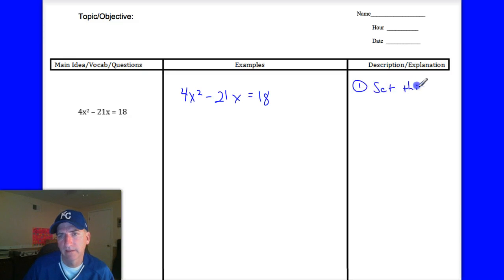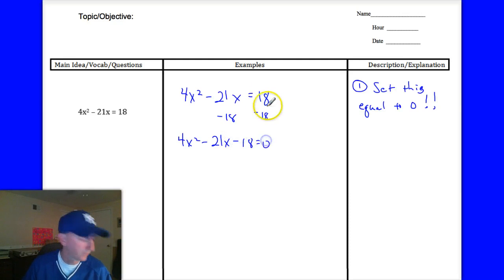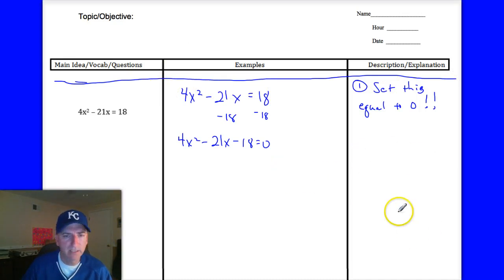So first thing we have to do, set this equal to 0. That's huge. You have to do that first. It goes back to that standard form, AX squared plus BX plus C equals 0. So to do that, you're going to subtract 18 from each side. Now when I do this, notice that this does not have a like term on the left-hand side. So we now have 4X squared minus 21X minus 18 is equal to 0. Now I don't think I said this, but you do need to put a line break between these problems to kind of separate them.